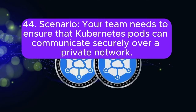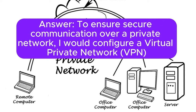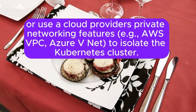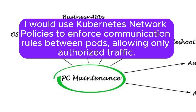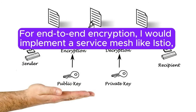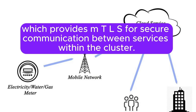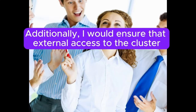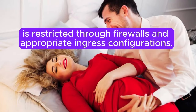Scenario 44: Your team needs to ensure that Kubernetes pods can communicate securely over a private network. How would you configure this? Answer: To ensure secure communication over a private network, I would configure a virtual private network (VPN) or use a cloud provider's private networking features, for example AWS VPC or Azure VNet, to isolate the Kubernetes cluster. I would use Kubernetes network policies to enforce communication rules between pods, allowing only authorized traffic. For end-to-end encryption, I would implement a service mesh like Istio, which provides mTLS for secure communication between services within the cluster. Additionally, I would ensure that external access to the cluster is restricted through firewalls and appropriate ingress configurations.